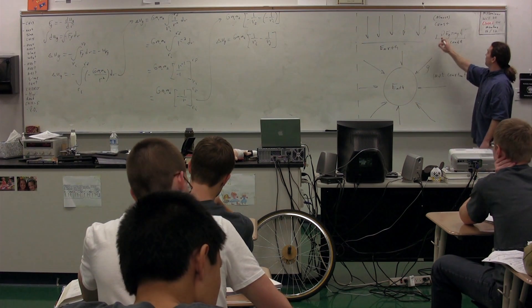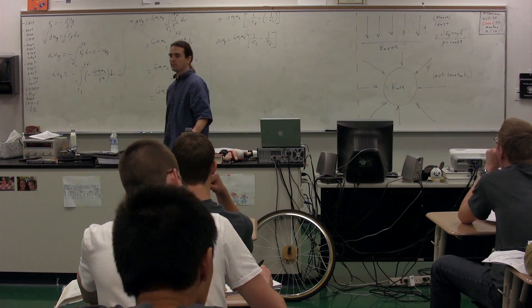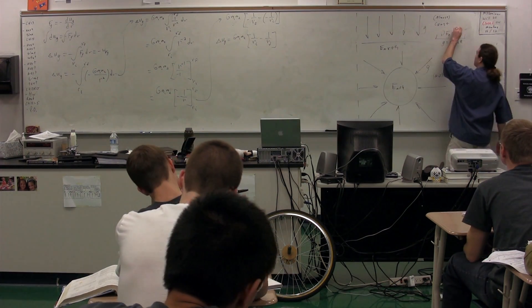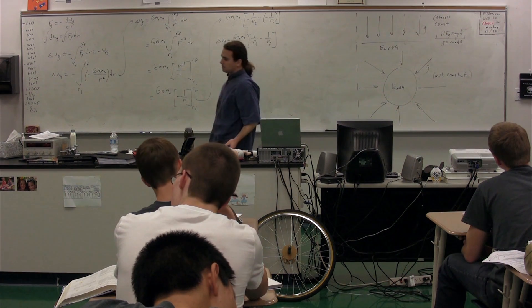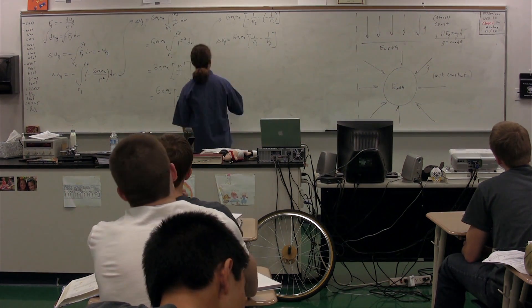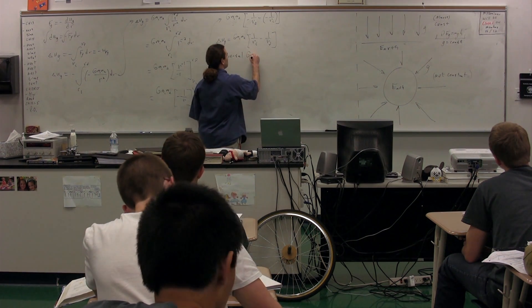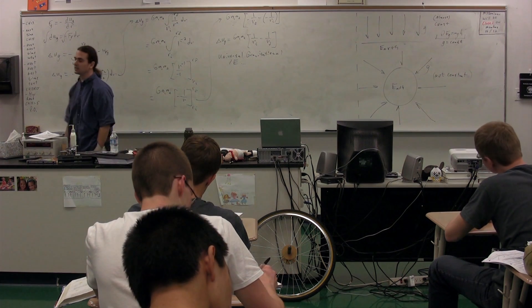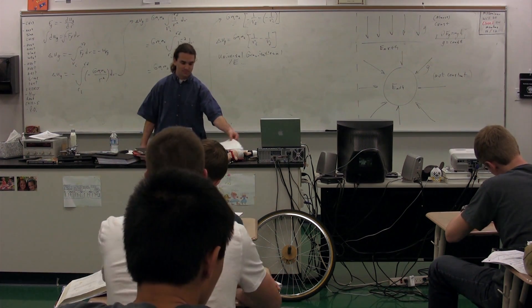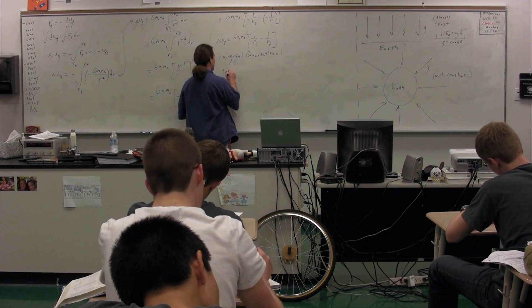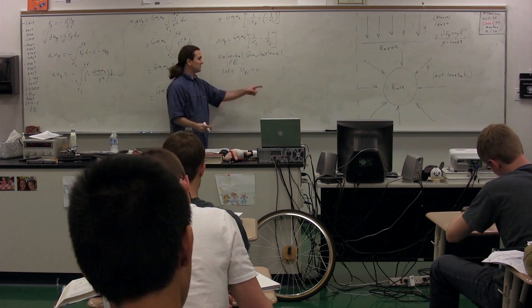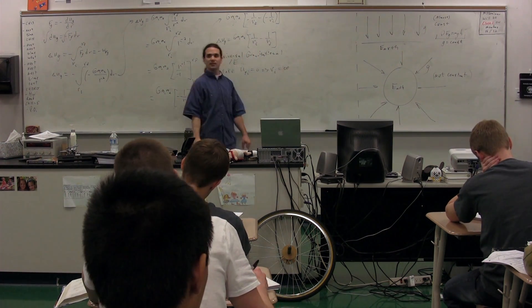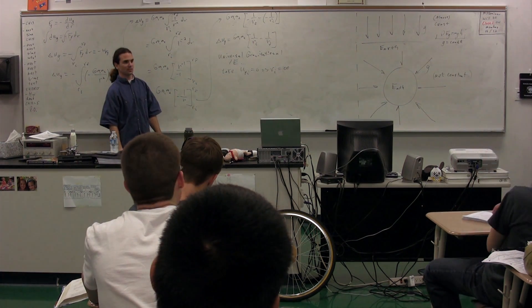In order to use gravitational potential energy equals mgh, we first had to identify the zero line. With universal gravitational potential energy — which is the gravitational potential energy in a non-constant gravitational field — we're lucky because the zero line is predefined. We take gravitational potential energy initial equals zero. This zero line is located at R initial equal to infinity — the initial position, the zero line, is infinitely far away.